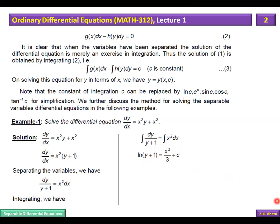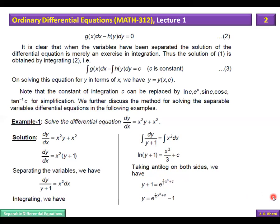The integration of 1/(y+1) gives log(y+1), and the right hand side gives x³/3 + C. We can then take the exponential of both sides, so (y+1) becomes e raised to the power (x³/3 + C). From here, y can be isolated. One further step can be done: e^C can be taken out and given a new constant name, or the solution can be left as is. The solution is obtained.